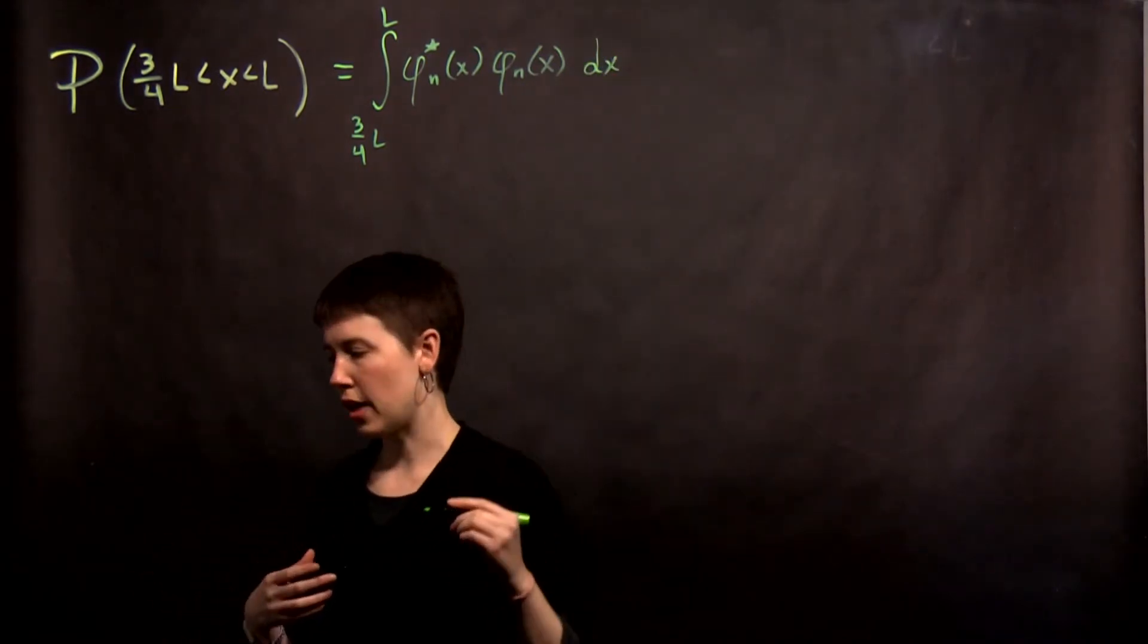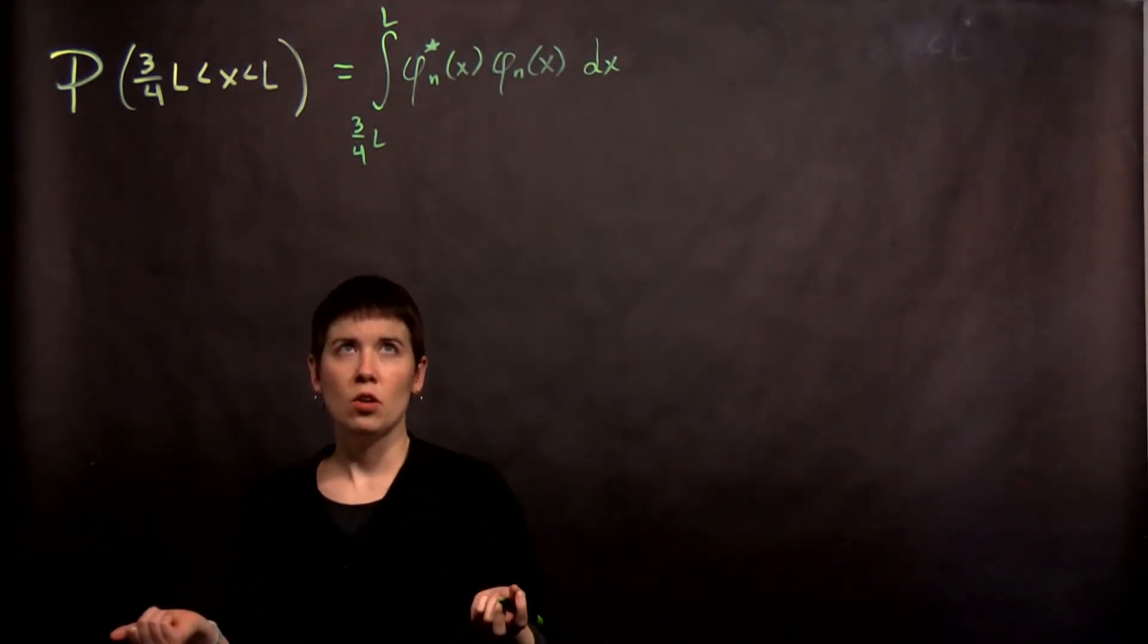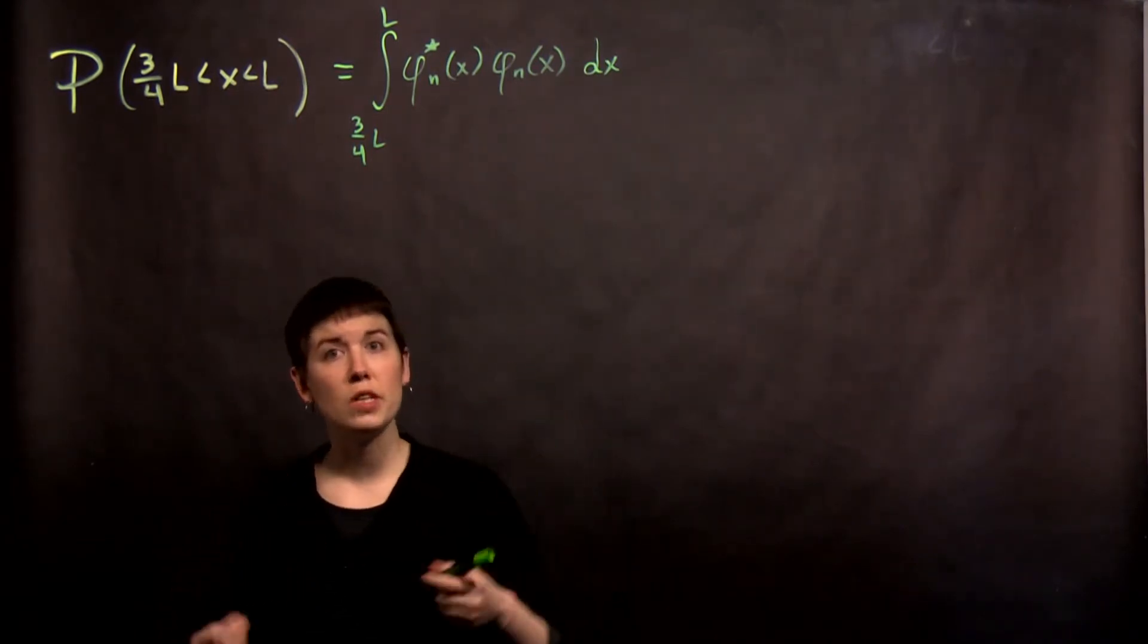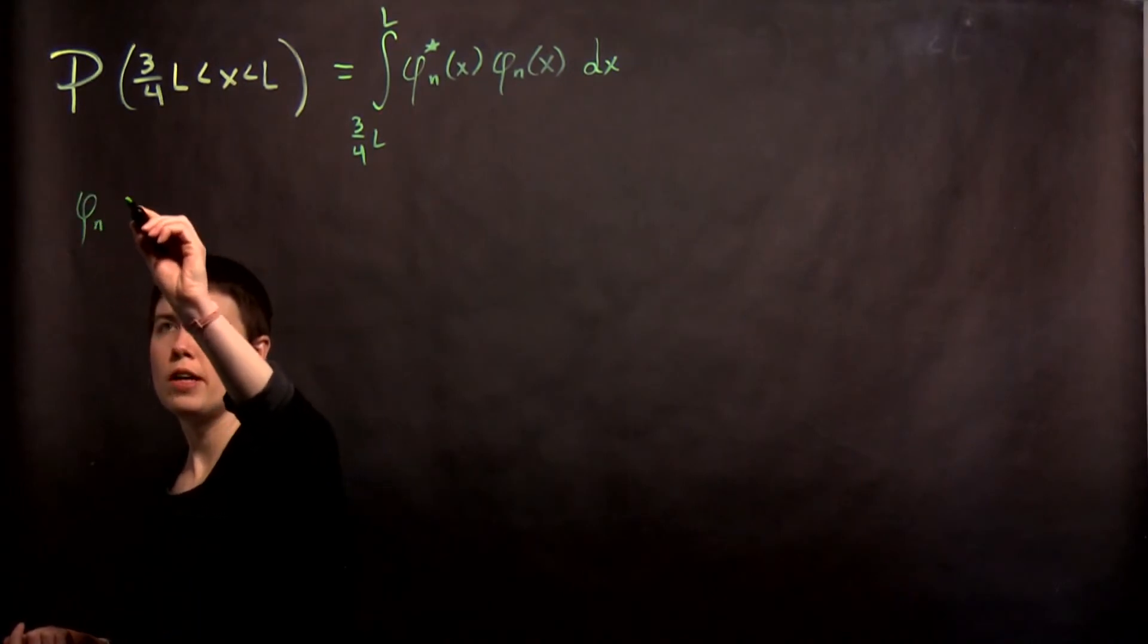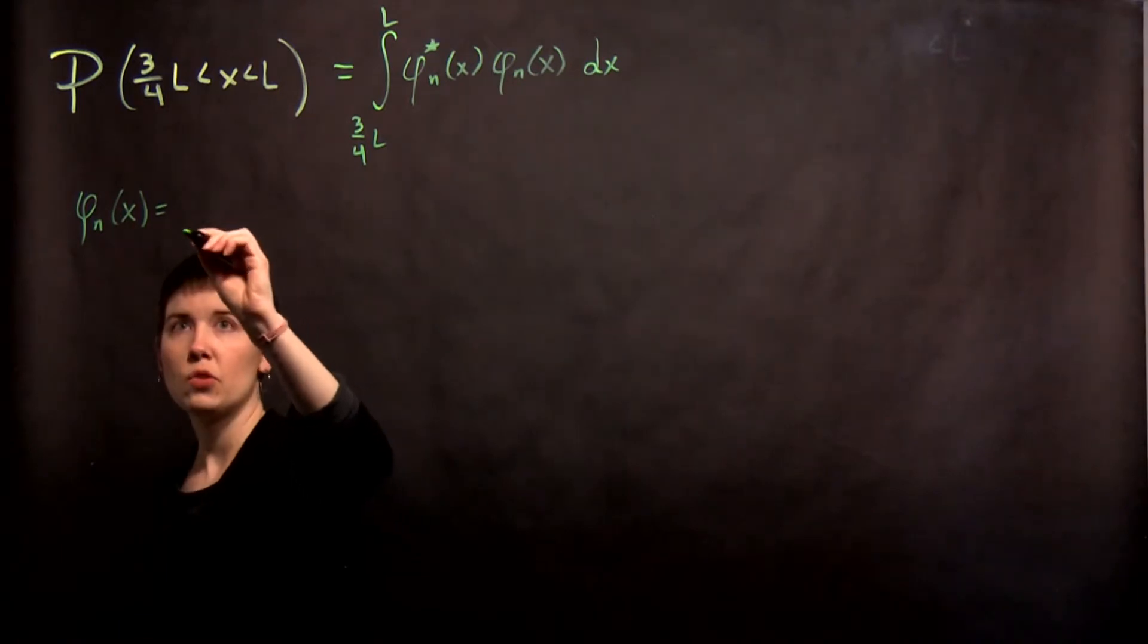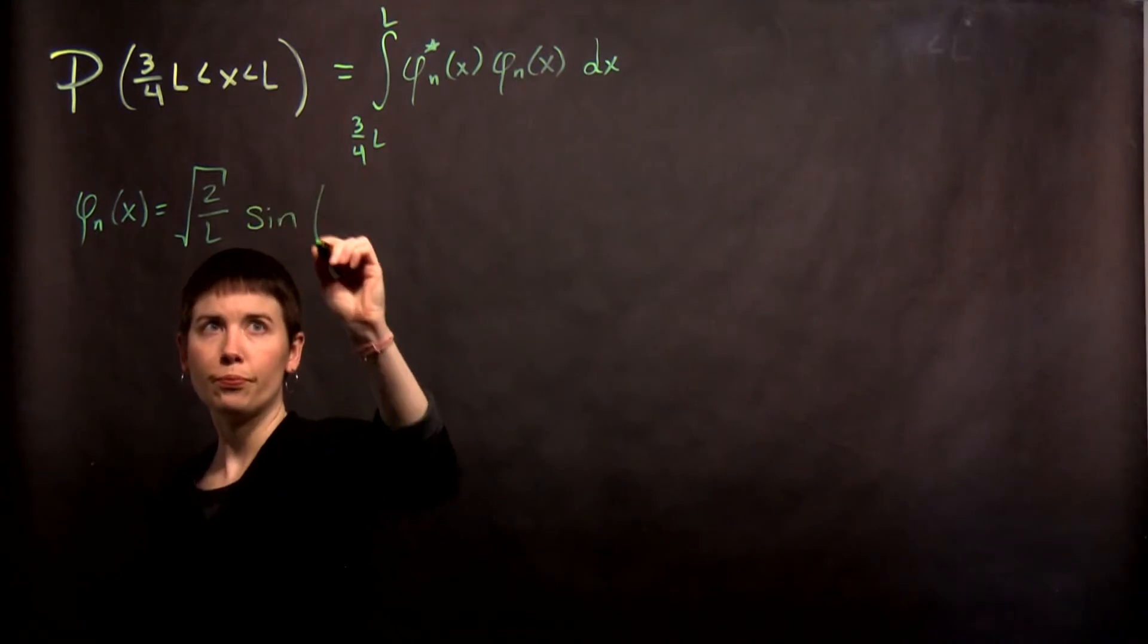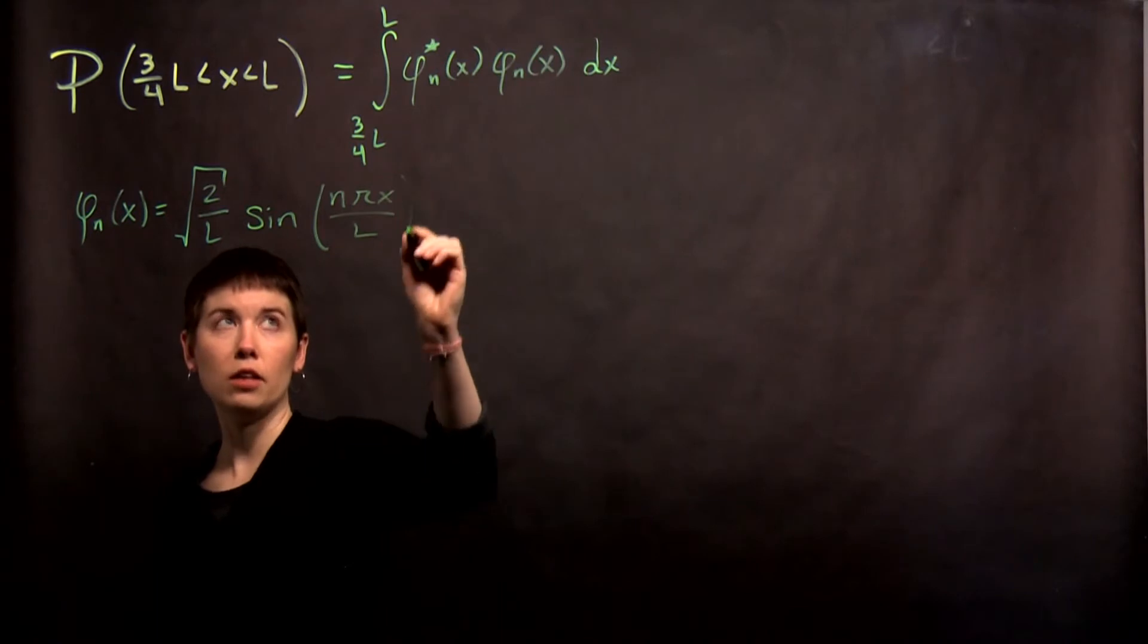Okay, so that's our setup. The next piece is we actually have to say what that phi is. And so we can use the result that we know what phi is going to be for our infinite well. If I just write that phi of x is equal to square root of 2 over l, again that's the normalization condition, and then sine of n pi x over l. That's my phi.